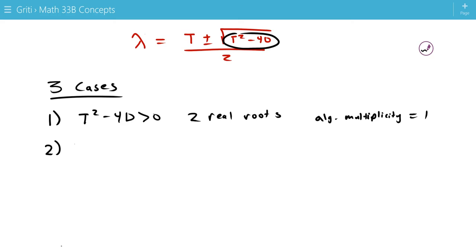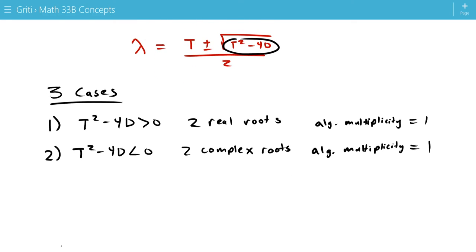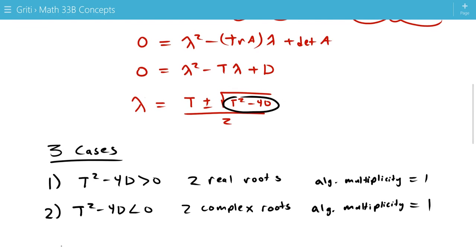Our second case is when T² - 4D is negative. So, that gives us two complex roots. And each of these have an algebraic multiplicity of 1. And to clarify what algebraic multiplicity means even more, it means that when we factor this characteristic polynomial, each factor only appears once.